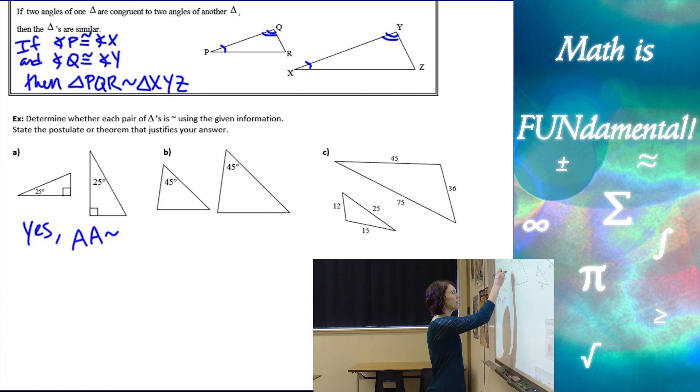Now let's look at B. We have one set of congruent angles, but that's it. We don't have any other information. And we definitely need more than just one set of congruent angles. So not enough info.